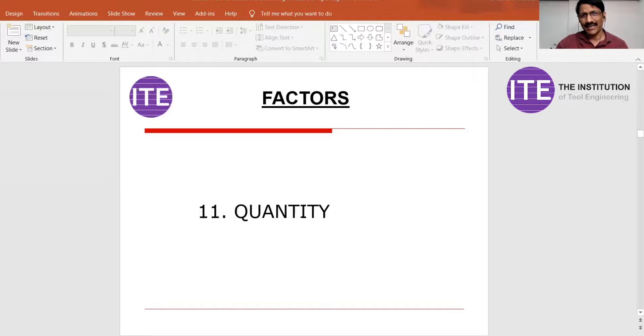Coming to the next point, quantity. How many components you want to produce? As per that, your process will change. If you want to go for prototype activity, maybe you are not investing in tooling, then process will be different. If you want to produce lakhs of components, the process will change.